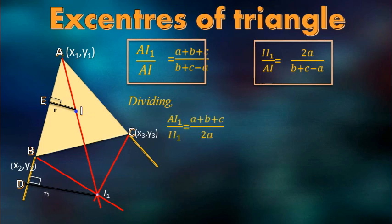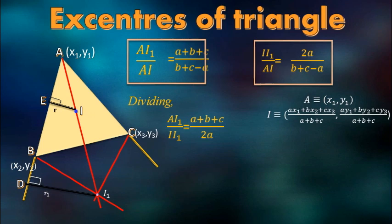Dividing these two equations, we will get a very important ratio: AI1 and II1. You must notice that we have the coordinate of point A, the coordinate of point I (the incenter), and also the ratio in which the point I1 is dividing the points A and I externally.